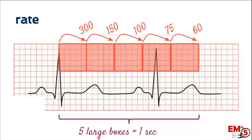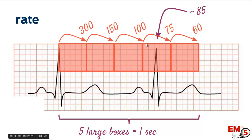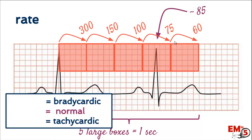Let's practice with this EKG. We have 300, 150, 100 — it's somewhere between 100 and 75, so we estimate about 85. Normal heart rate is between 60 and 100, with bradycardic being less than 60 and tachycardic greater than 100.